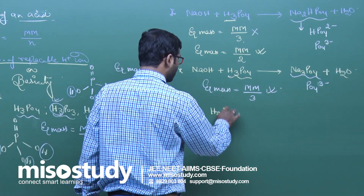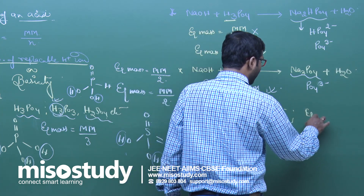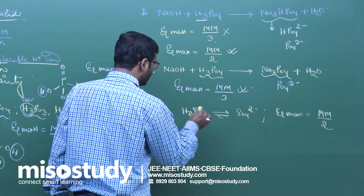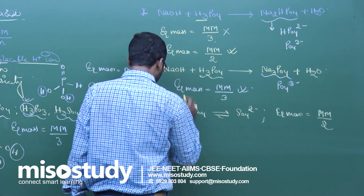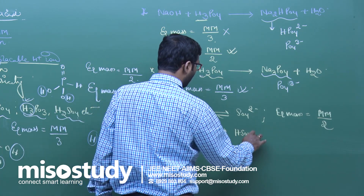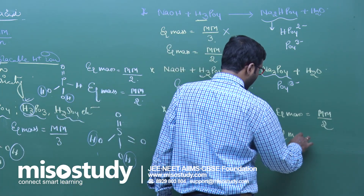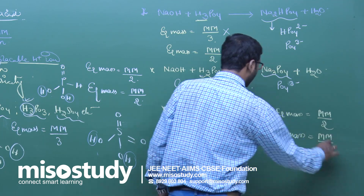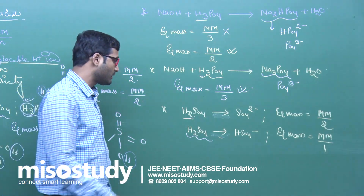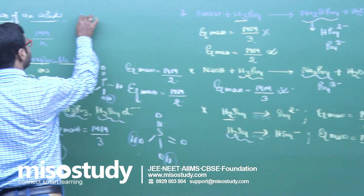Similarly, when H₂SO₄ completely converts into SO₄²⁻, equivalent mass = molecular mass / 2, because two H⁺ ions are released. But when H₂SO₄ converts into HSO₄⁻, equivalent mass = molecular mass / 1, because only one H⁺ ion is released. This gives us more examples of how equivalent mass changes as per the situation.